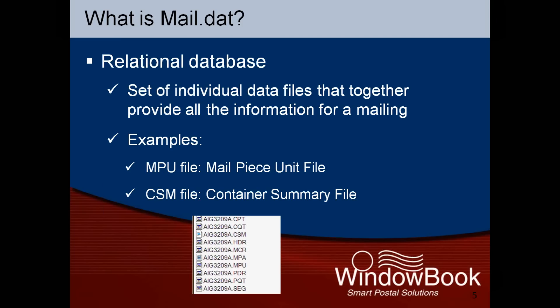The current mail.dat specification allows for up to 21 different file types, depending on what is needed to accurately describe the mailing. Most typical mail.dat file sets, however, contain around 10 mail.dat files.